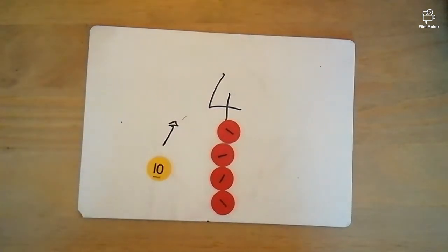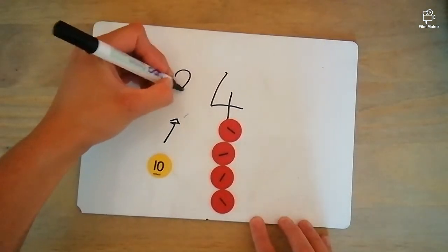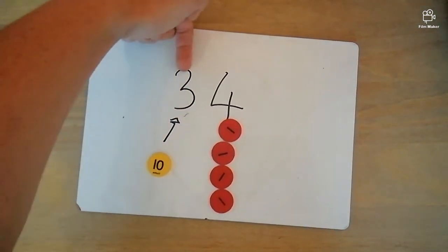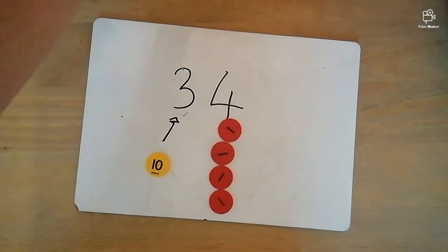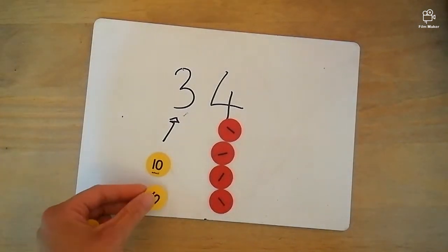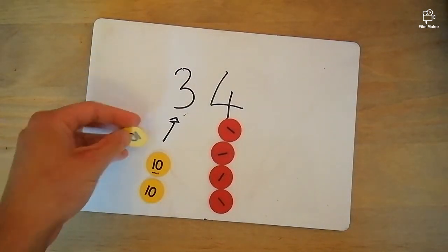Similarly, if we no longer have the number 14 and we have the number 34, the 3 doesn't represent a 3, it actually represents 30 and we can show that with three tokens here.